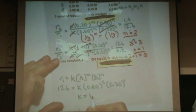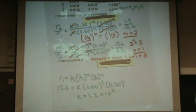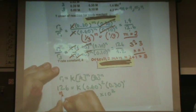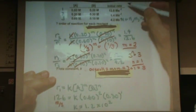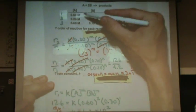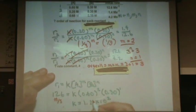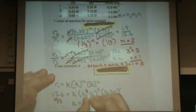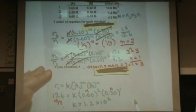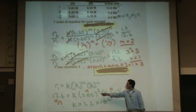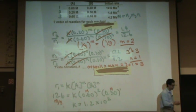k is going to turn out to be 1.2 times 10 to the 2. Now, how do we find the units? Let's try to find the units. This is molarity per second — I get this straight from the table. And I know [A] and [B] are both in molarity, so I've got molarity here and molarity here, so it's going to turn out to be molarity cubed. I'll zoom in so it's a little easier to see.